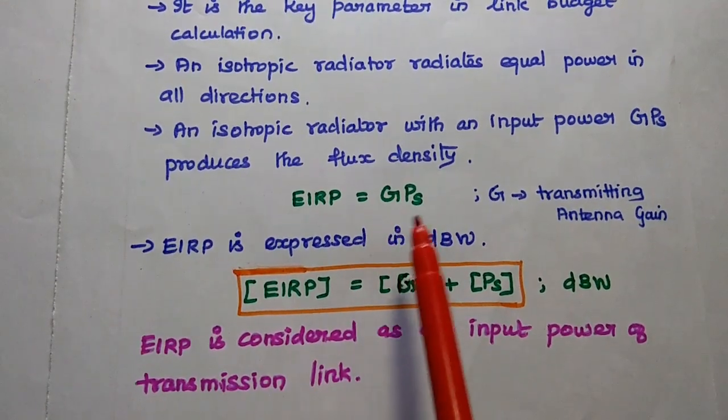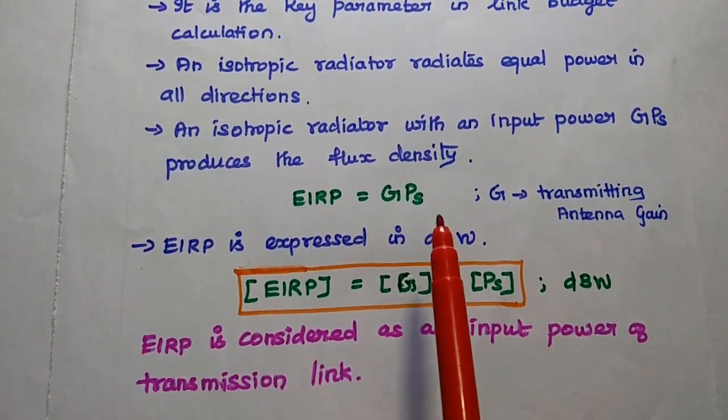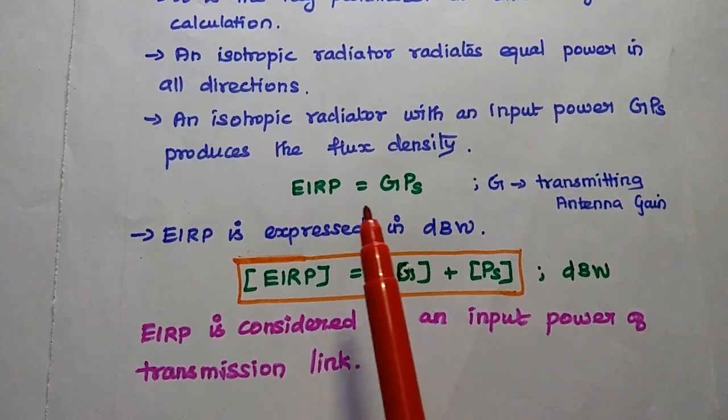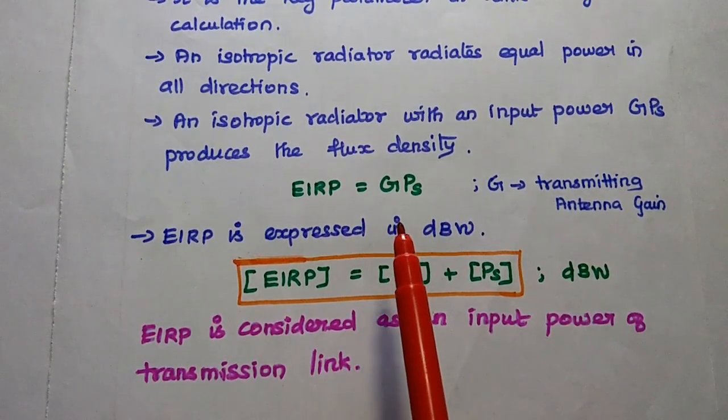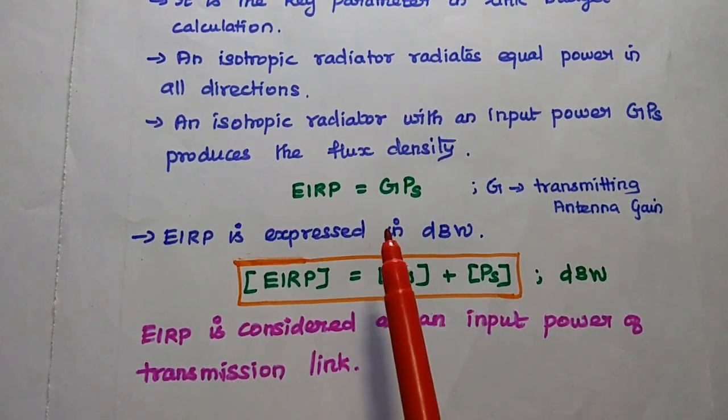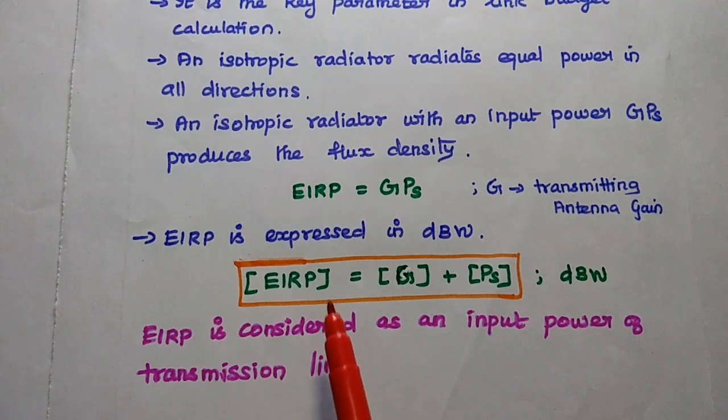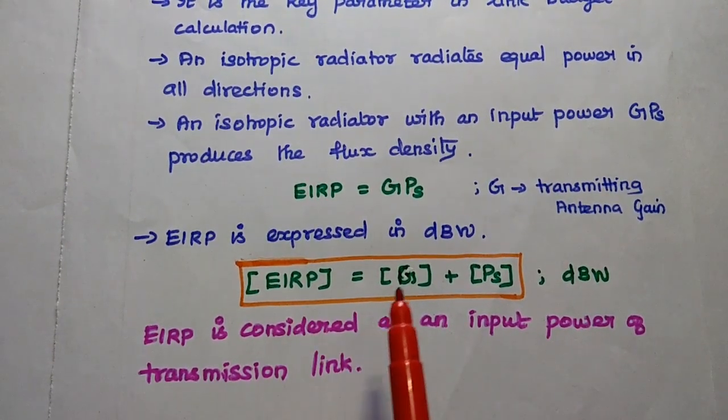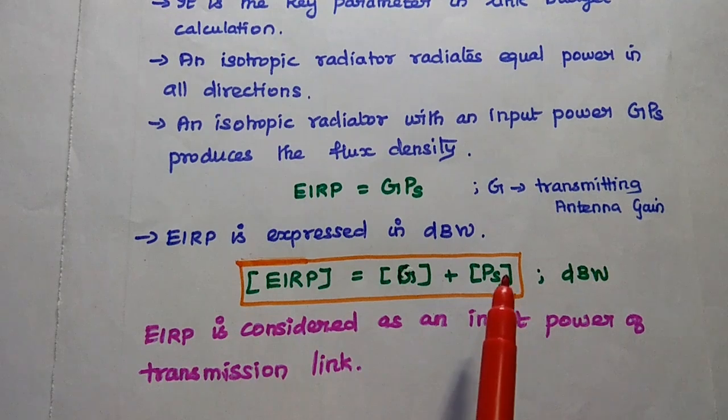This is what the EIRP value is. So in this link power budget equation, we can consider this EIRP value as the input power in the transmitting side. In terms of dBW, we can write this term as EIRP = G + PS.